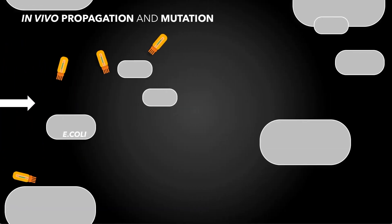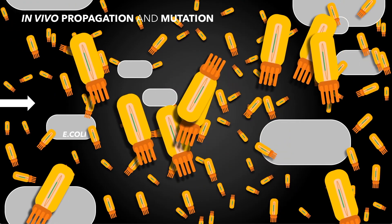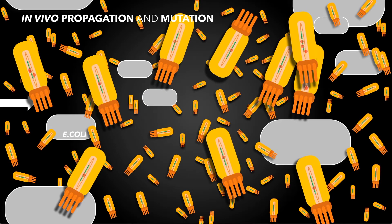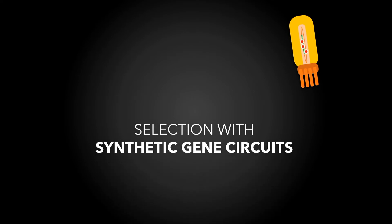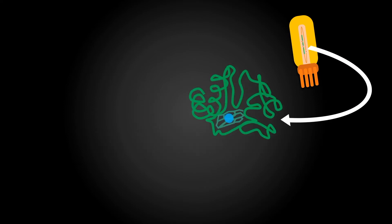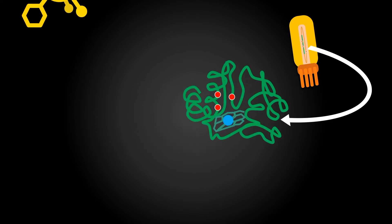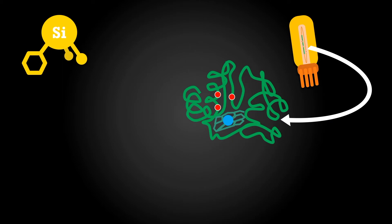By allowing the phages to infect modified E. coli cells, we cause massive mutation. As a result, different variants of our gene of interest develop. Next, we use synthetic gene circuits to specifically select for variants with the desired protein function. At the end, only the most efficient variants of the gene remain, can be isolated, and then used, for instance, to synthesize carbon-silicon bonds.